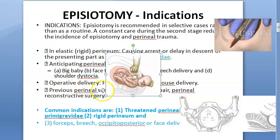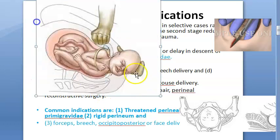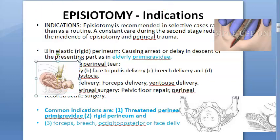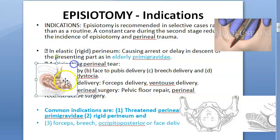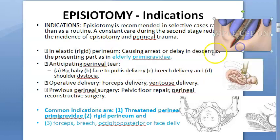Looking at shoulder dystocia: basically after delivery of the head, the baby's anterior shoulder is impacted on the maternal pubic symphysis. In this condition, episiotomy is an indication. Note that episiotomy should be done before the baby's head is fully out.